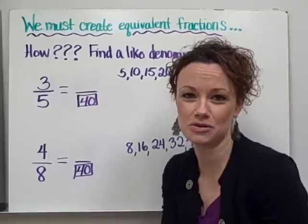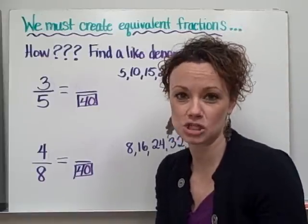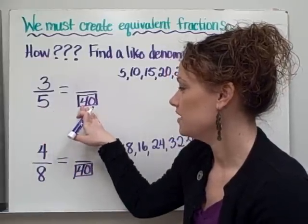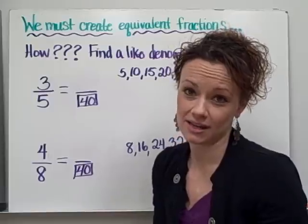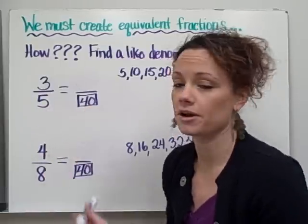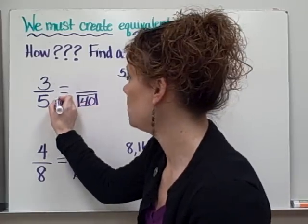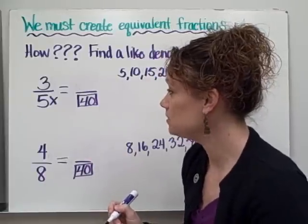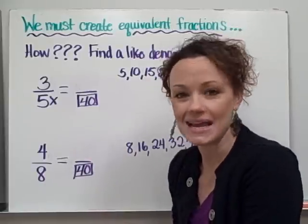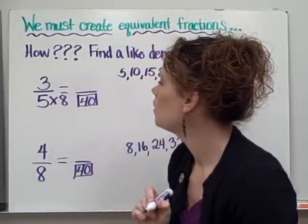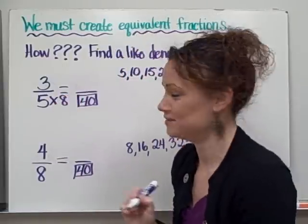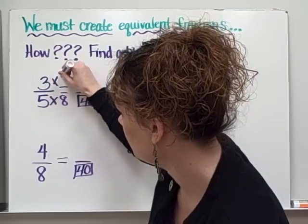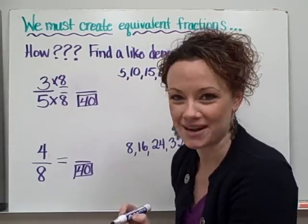Alright, so now we have our new denominator. Just like in finding equivalent fractions in our last lesson, we're going to ask ourselves, what do we need to use to figure out the relationship, multiplication or division? In this case our numerator is going up, so we're going to be using multiplication. So you ask yourself, how do we get from five to forty using multiplication? Well, with our five times tables, we multiply five by eight to get to forty. Whatever you do to the bottom, you must do to the top. So if we multiply our denominator by eight, we must multiply our numerator by eight. And three times eight equals twenty-four.